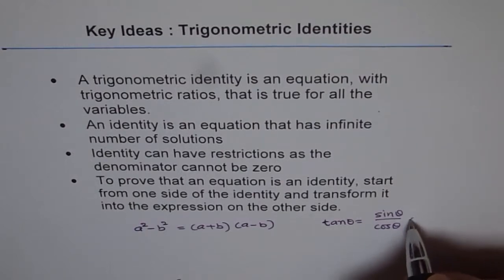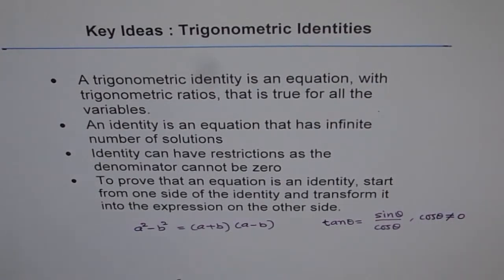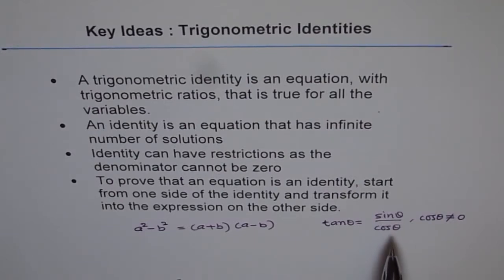So the restriction is that cos θ is not equal to zero. That is the restriction: π/2, 3π/2, 5π/2. Those values will not be considered because those are the restrictions, the denominator cannot be zero, and that is why we have few restrictions.